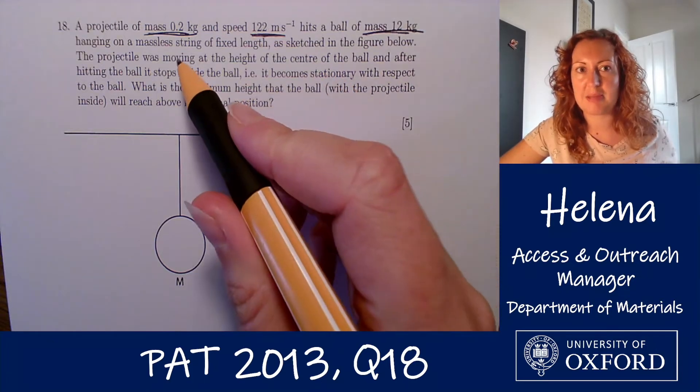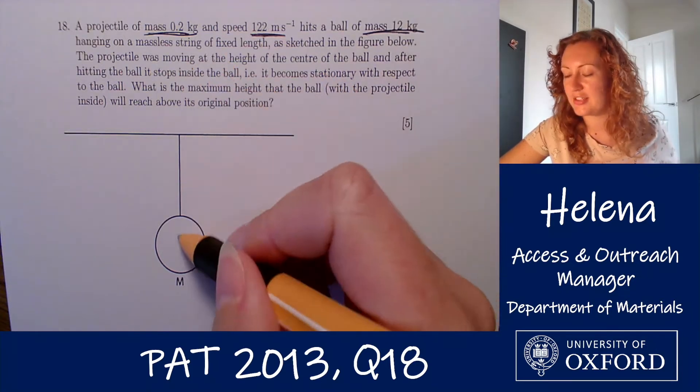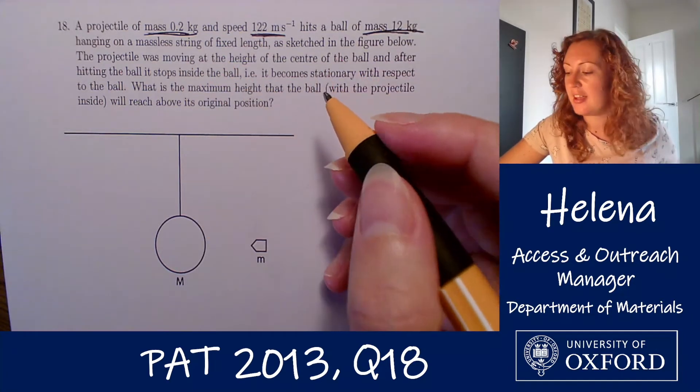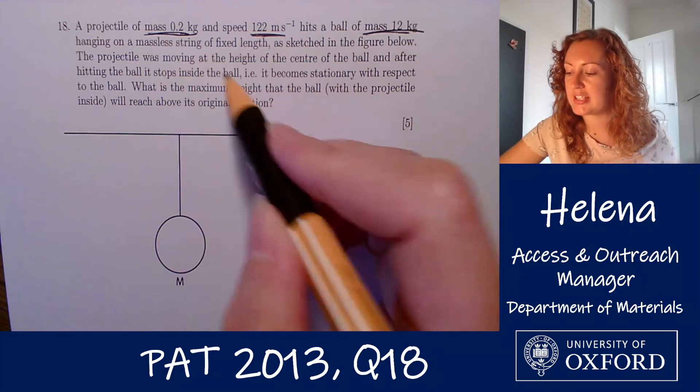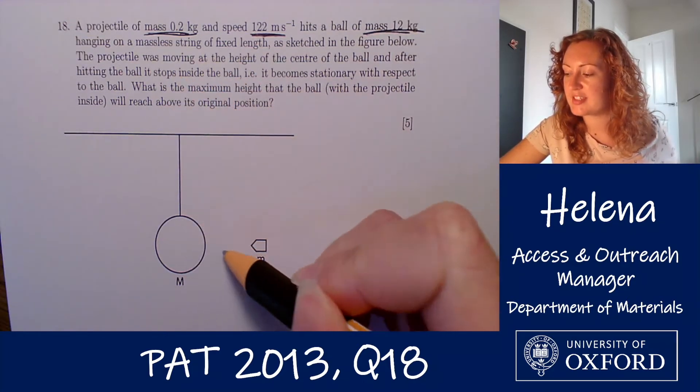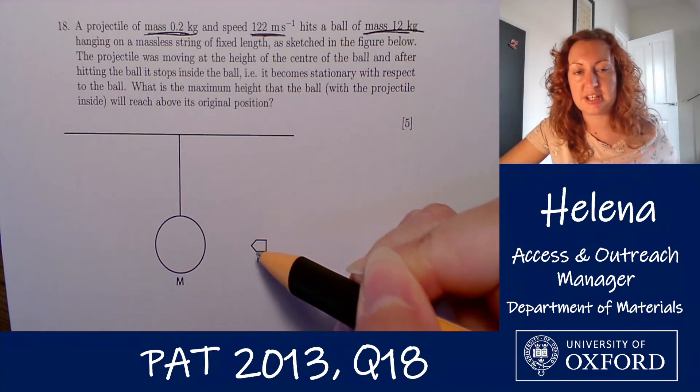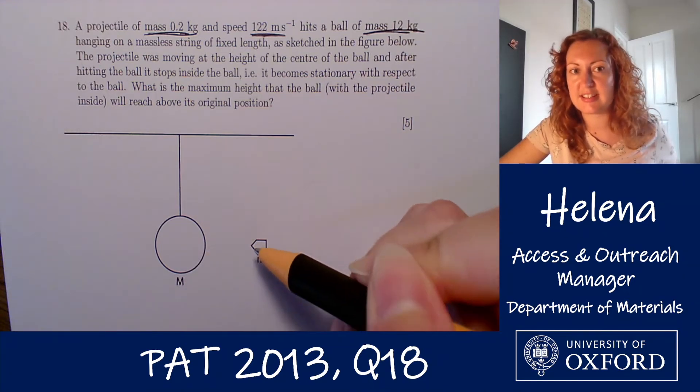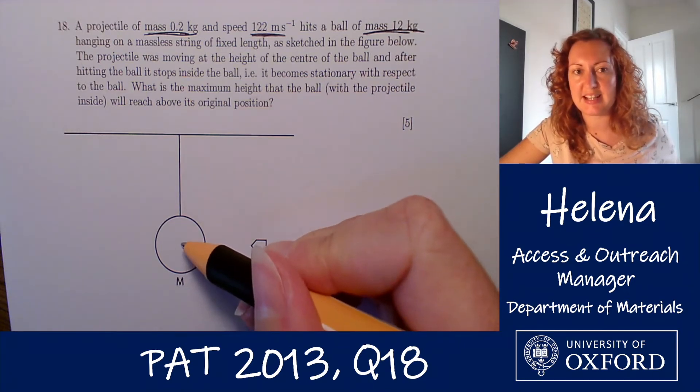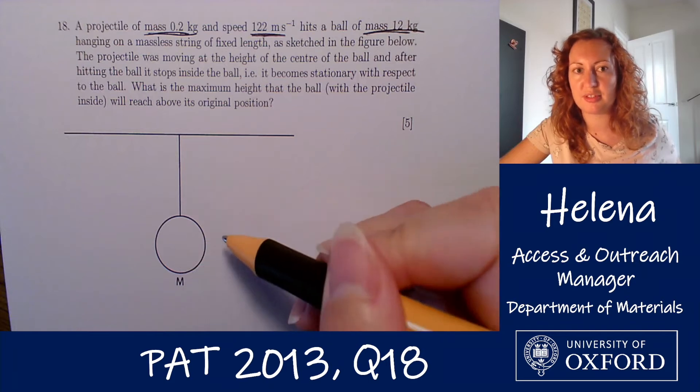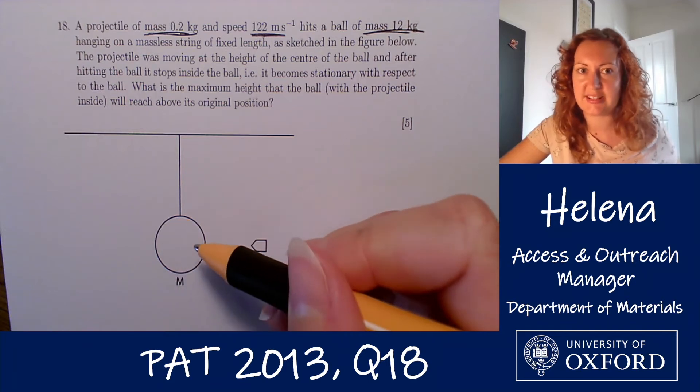Now the ball is hanging on a massless string of fixed length as shown in this diagram, and we're also told that the projectile is moving at the height of the center of mass of the ball. We're also told that after the collision this projectile becomes embedded in the ball and they'll move following the collision as one entity.